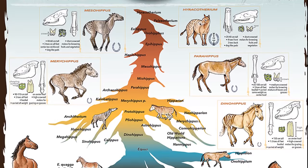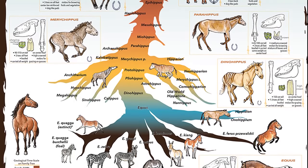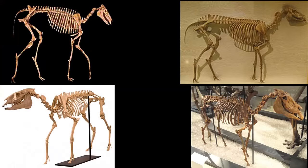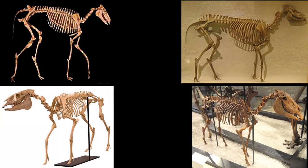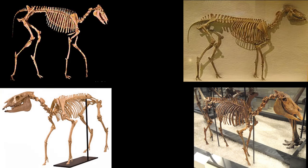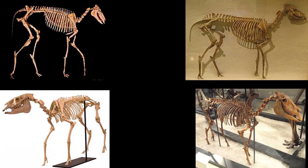One of the most common examples that evolutionists like to use for proof of evolution is the horse. They present fossil after fossil, but they conveniently leave out that this sequence of fossils was disproven in the 1950s by the evolutionary scientists themselves.